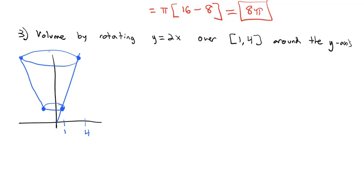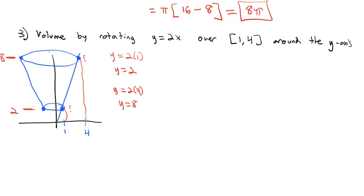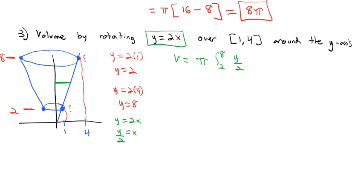When x = 1, y = 2(1) = 2. When x = 4, y = 2(4) = 8. So the volume is π times the integral as y goes from 2 to 8. We also need the radius in terms of y: solving y = 2x gives x = y/2. So the volume is π times the integral from 2 to 8 of (y/2)² dy.